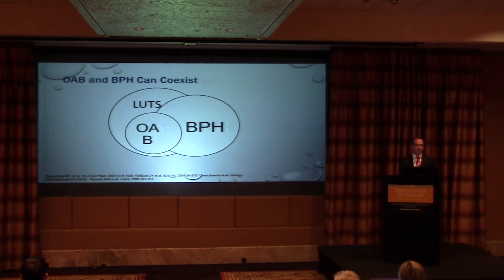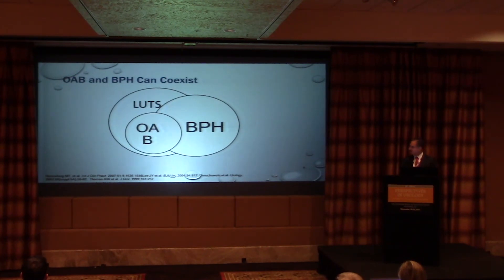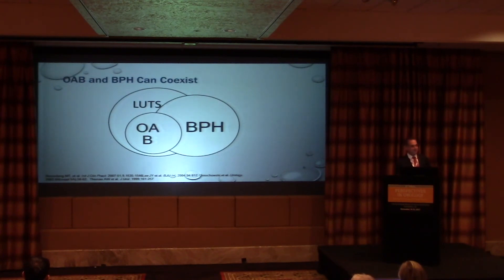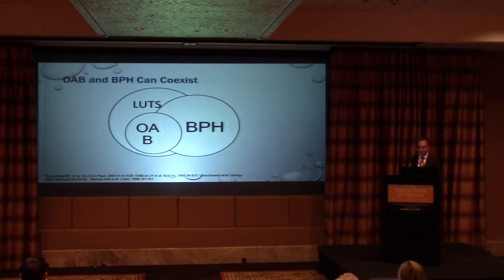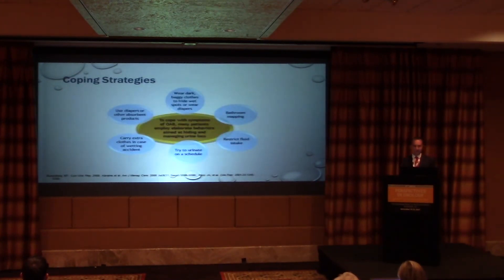As we deal with LUTS, we should acknowledge that OAB and BPH can coexist. You can have a big prostate — as was said, it doesn't have to be obstructed. If it is obstructed, you can have LUTS symptoms. If you have OAB, you can have LUTS symptoms. And you can certainly have them together.